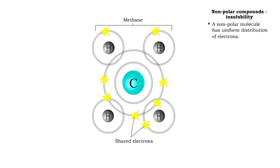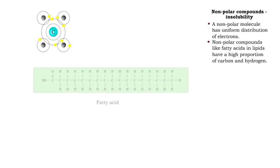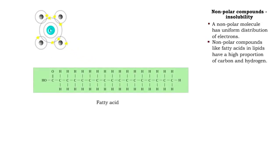The electrons of nonpolar covalent compounds are uniformly distributed. Compounds such as lipids are made up mostly of carbon and hydrogen. These are considered nonpolar.